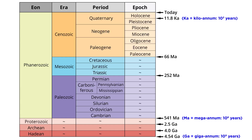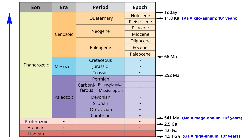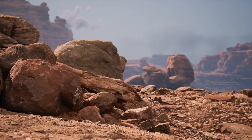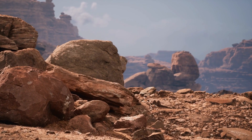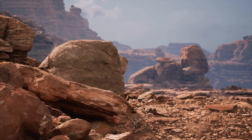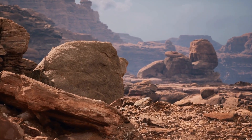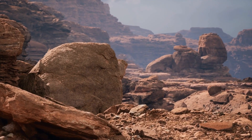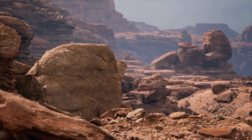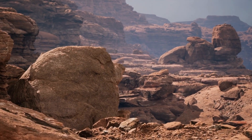We just got finished discussing the four eons of geologic time — the Hadean, Archean, Proterozoic, and Phanerozoic. Now let's get more specific with the geologic structures that span those eons. We're going to explore how rocks on Earth can change their shape, thereby creating dramatic landforms over the millennia that field geologists love to study today.